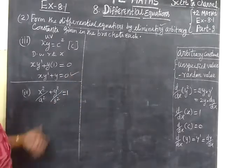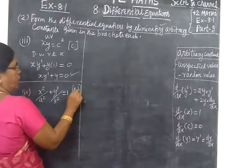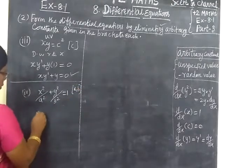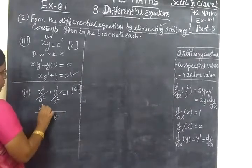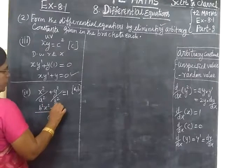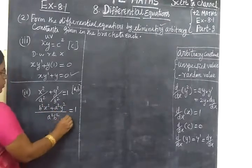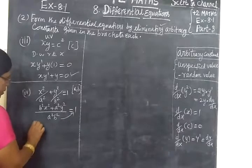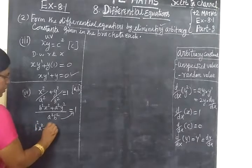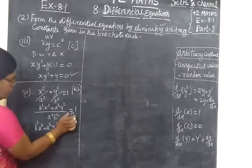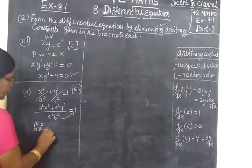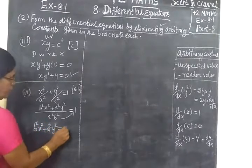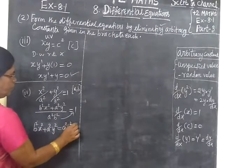Now for the second problem, we have two arbitrary constants A and B. We take the LCM — A squared B squared — then cross multiply: B squared x squared plus A squared y squared equal to 1. Rearranging: B squared x squared plus A squared y squared equal to A squared B squared.